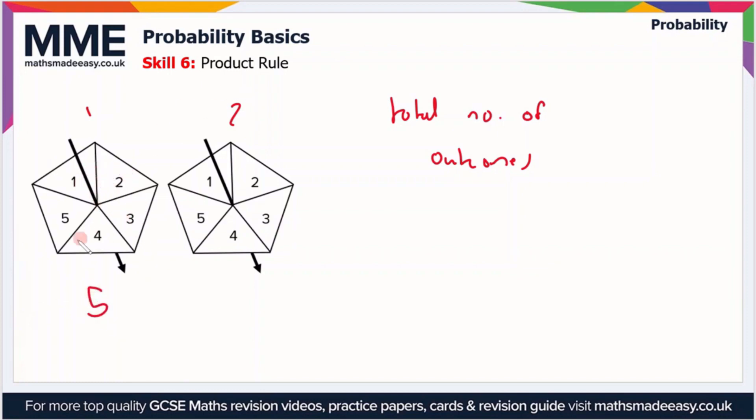That's the same for spinner two because they're identical spinners. So in order to get the total number of outcomes, all I have to do is multiply the number of outcomes for spinner one by the number of outcomes for spinner two. The total number of outcomes is just five times five, which equals 25.